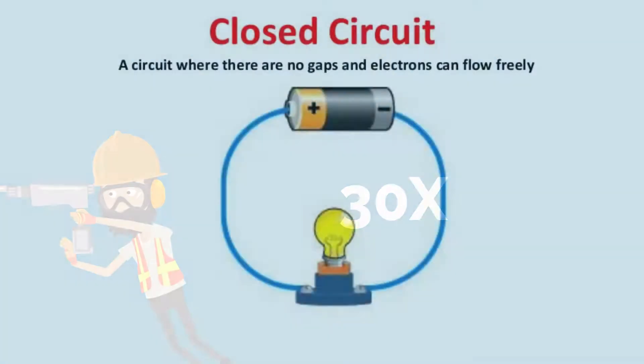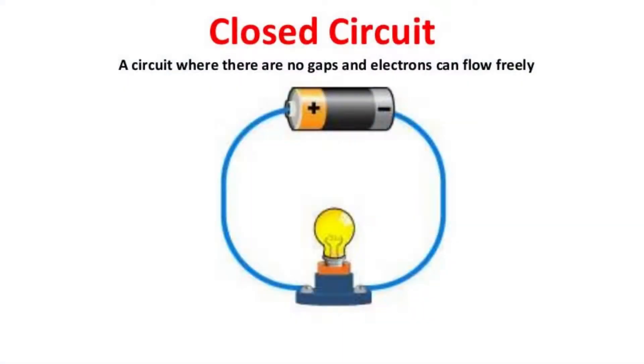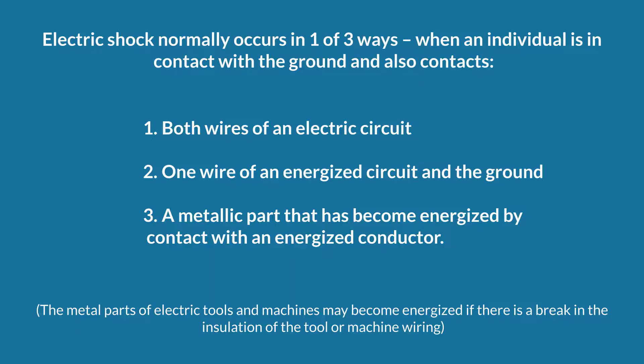Electricity travels in closed circuits, and its normal route is through a conductor. Electric shock occurs when the body becomes a part of the circuit.